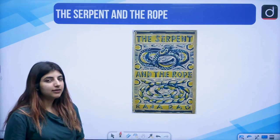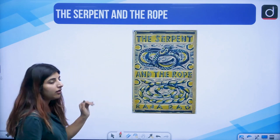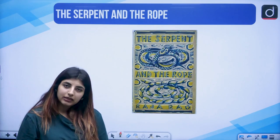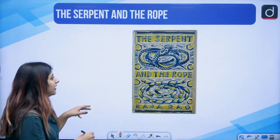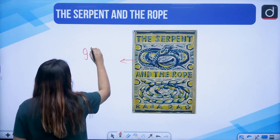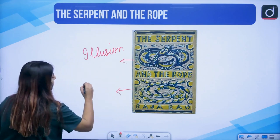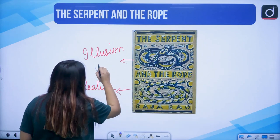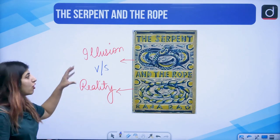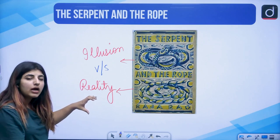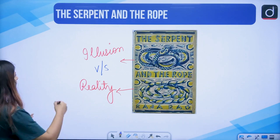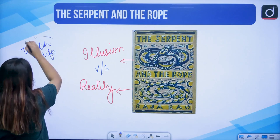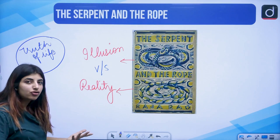Through this novel, the theme of illusion versus reality is explored — how man should be pursuing the truth of life. What we see is not always true. The main characters: number one is Ramaswamy, a young intellectual Brahmin who is the protagonist and around whom the entire story revolves. Coming to Madeline — she is the wife of Ramaswamy. The third prominent character is Savitri, a Cambridge student whom Ramaswamy meets and they eventually fall in love.